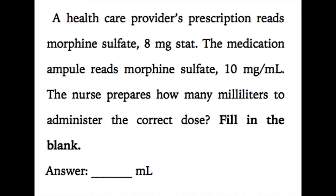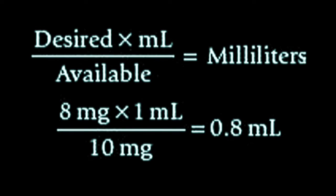The correct answer here is 0.8. We use the formula: desired dose divided by available dose. That is, 8 mg divided by 10 mg per ml. Hence, we get 8 mg times 1 ml divided by 10 mg, which equals 0.8 ml.